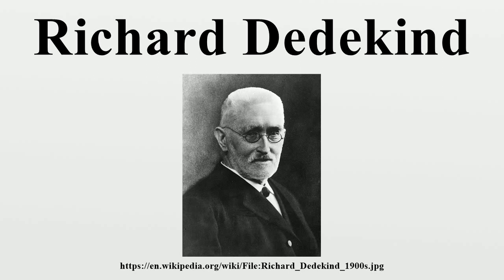Dedekind made other contributions to algebra. For instance, around 1900, he wrote the first papers on modular lattices. In 1872, while on holiday in Interlaken, Dedekind met Georg Cantor, thus beginning an enduring relationship of mutual respect. Indeed, Dedekind became one of the very first mathematicians to admire Cantor's work concerning infinite sets, proving a valued ally in Cantor's disputes with Leopold Kronecker, who was philosophically opposed to Cantor's transfinite numbers.